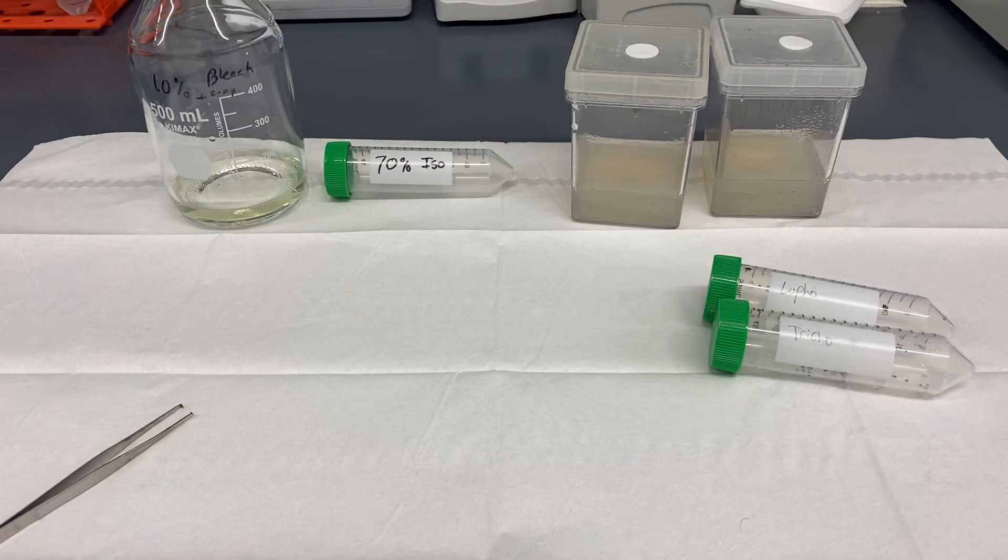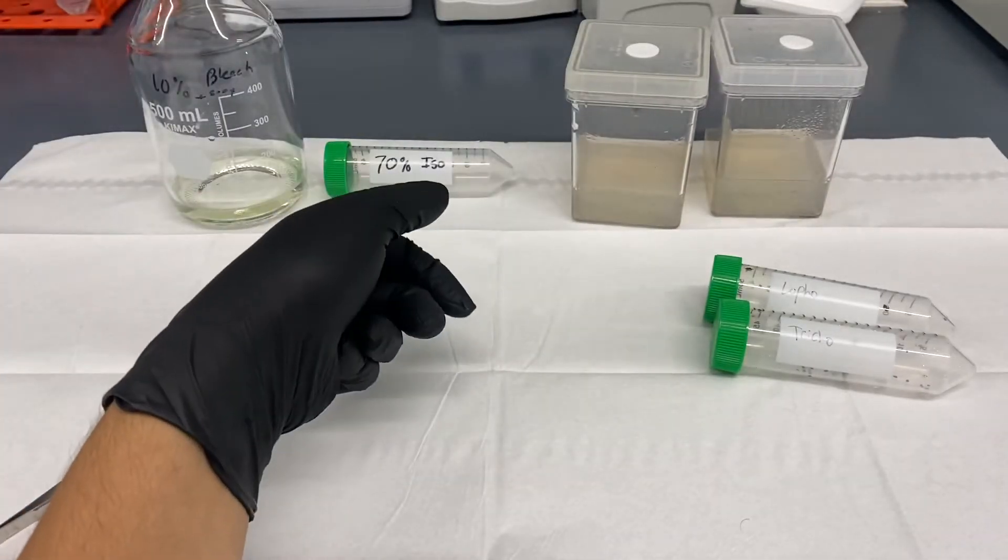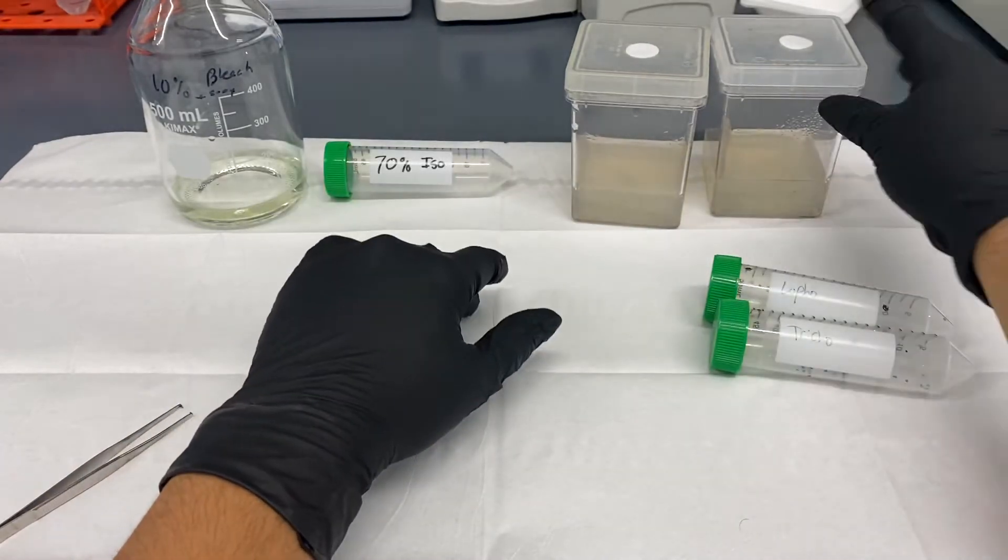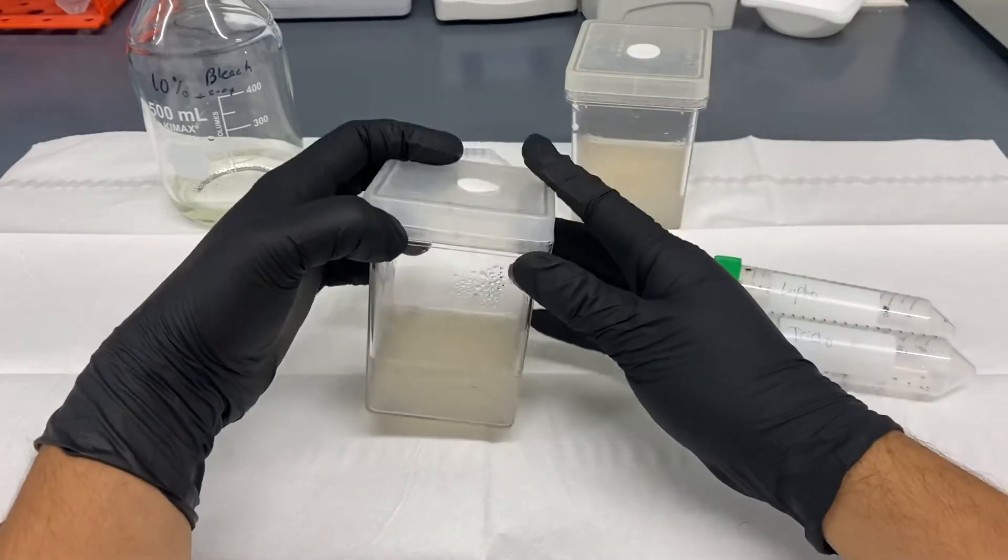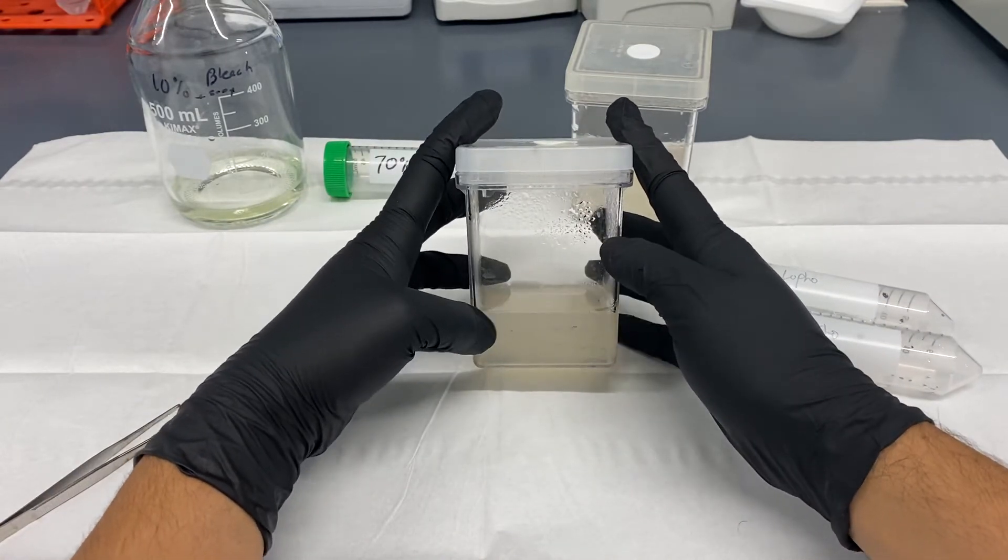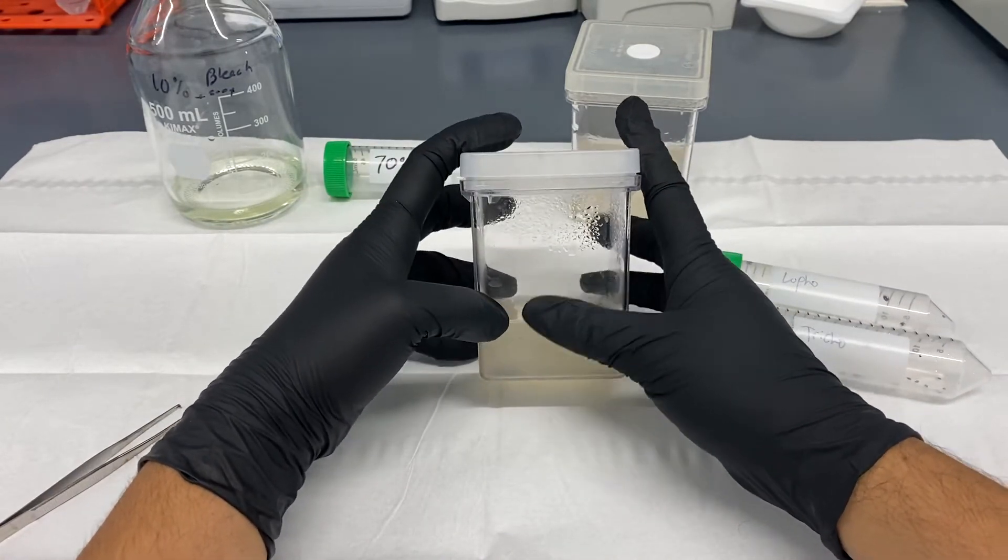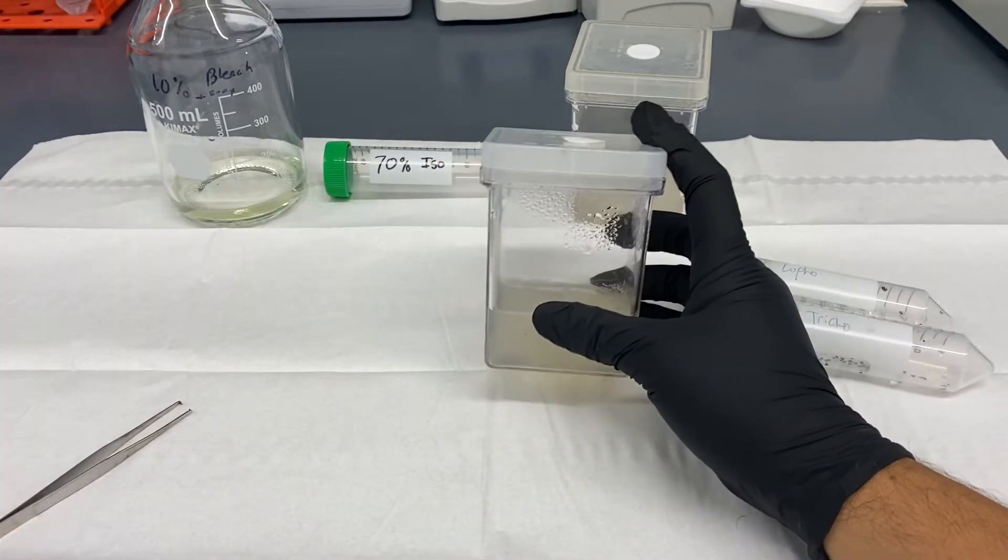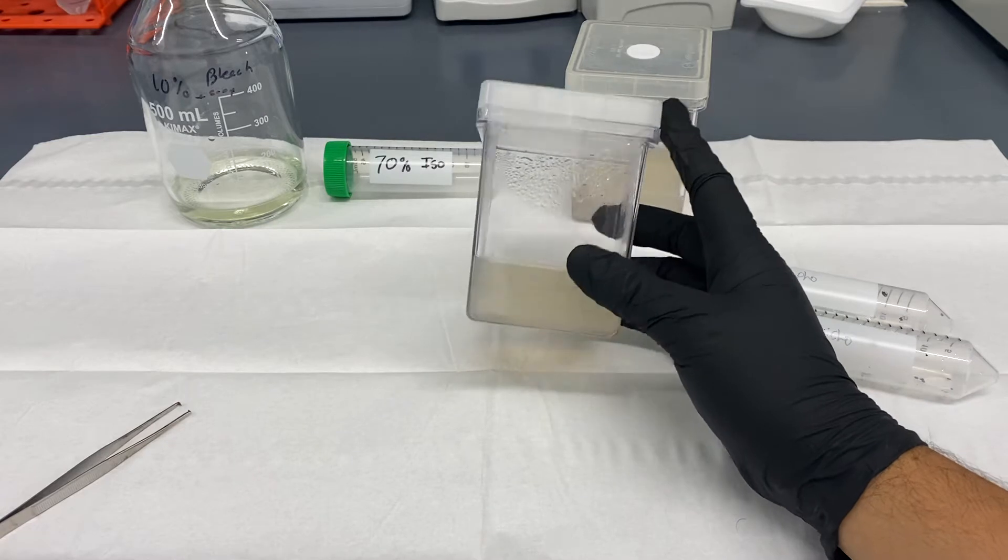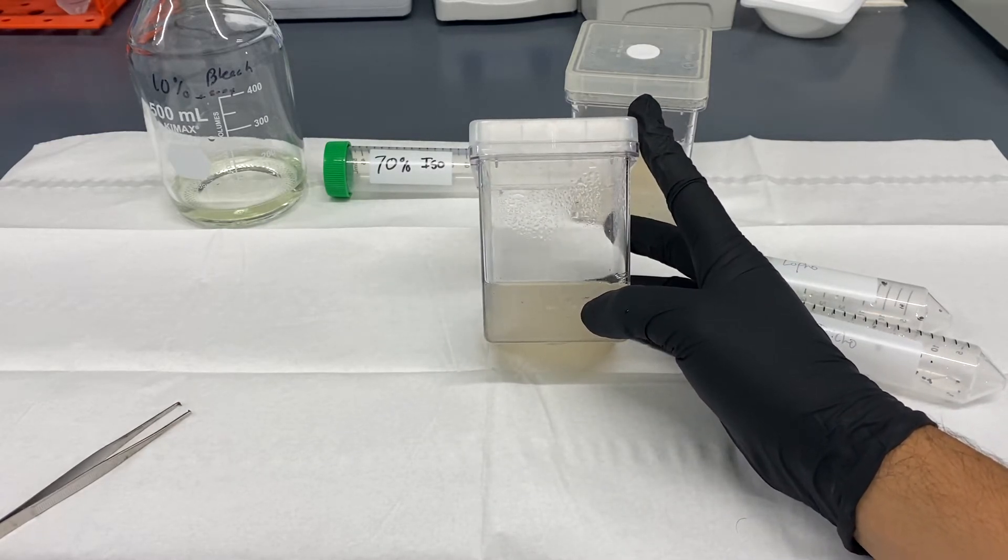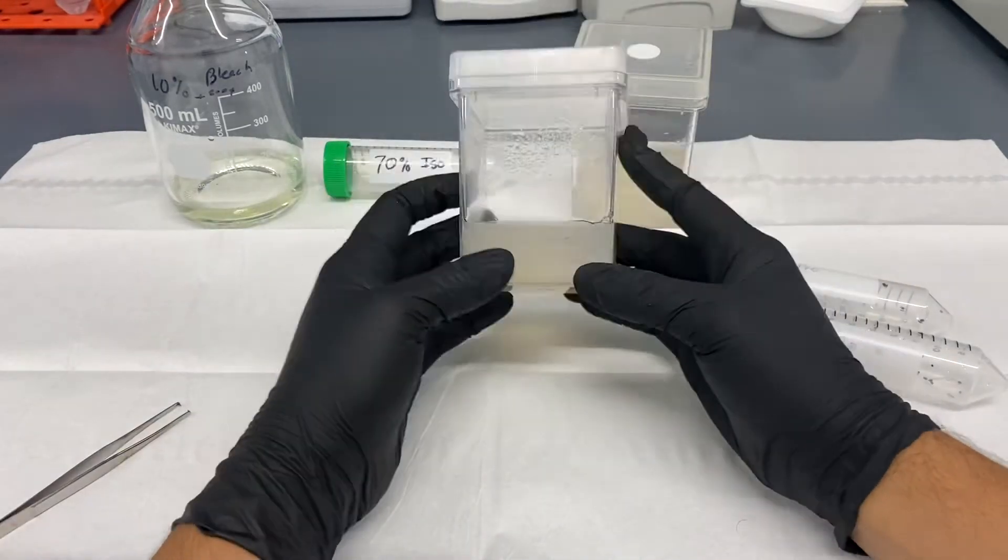So pretty much what we do is if I had an actual cactus here I would cut it up into a bunch of pieces and place that onto this media. This media I'm going to show you guys how to make in another video is actually MS media, Murashige and Skoog, they are the creators of this salt mixture that's able to support plants.